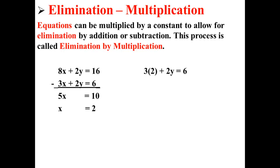Now we take one of the original equations and plug in x equals 2. This gives us the equation 3 times 2 plus 2y is equal to 6, or 6 plus 2y equals 6, or 2y equals 0, and then we just divide by 2 to find that y equals 0.